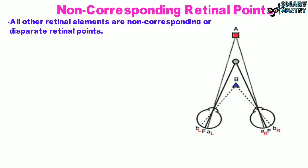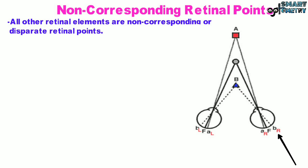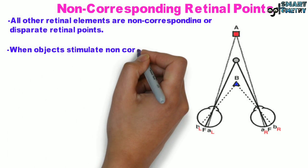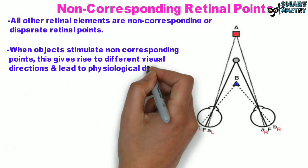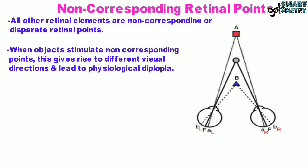Another point B stimulates temporal retinal points B-L and B-R in the left and right eyes respectively. These points are non-corresponding points and so the object appears to be closer than the fixation point. When objects stimulate non-corresponding points, this gives rise to different visual directions and leads to physiological diplopia.